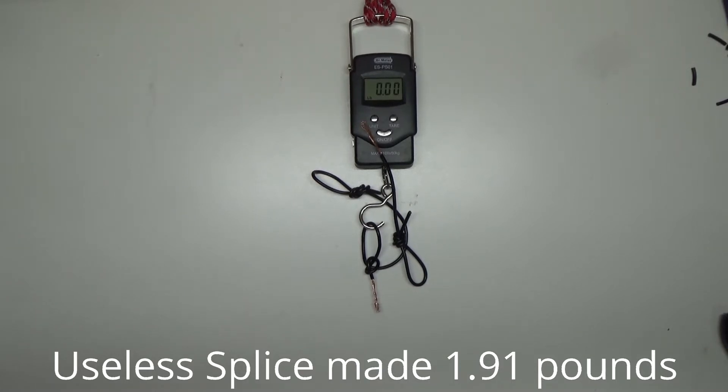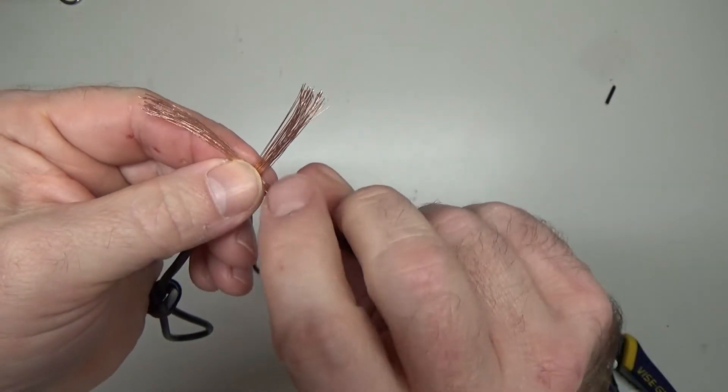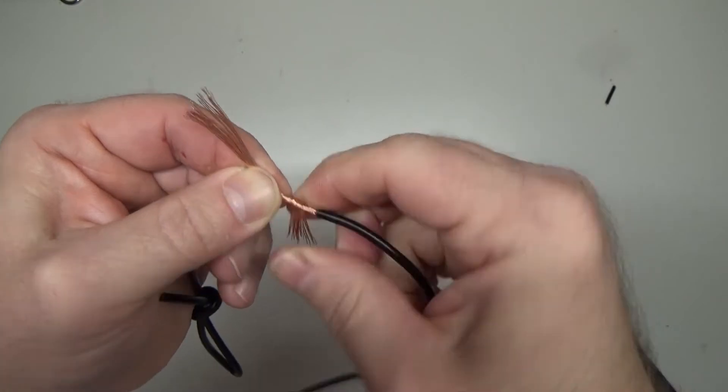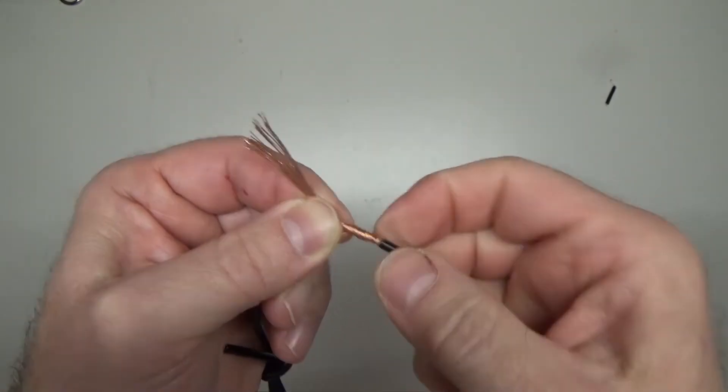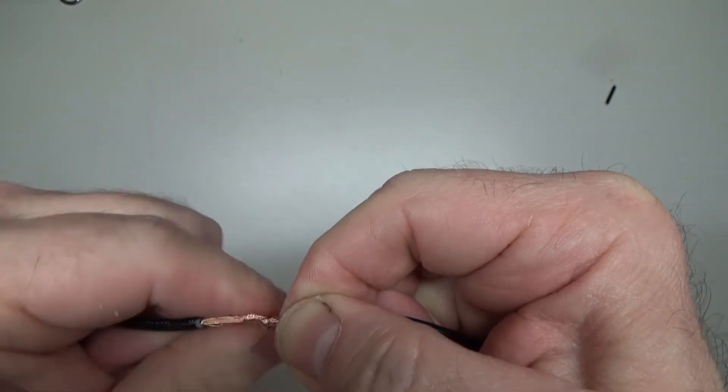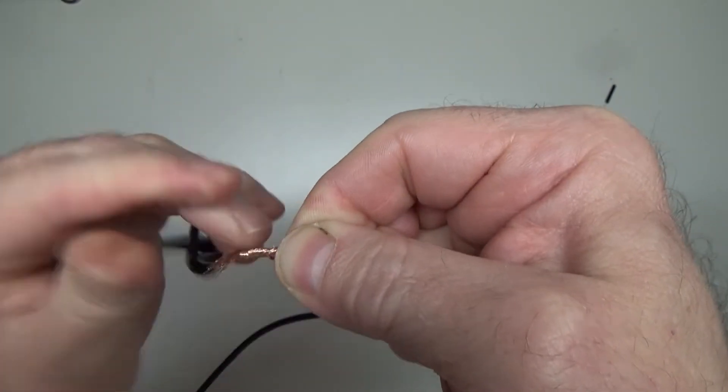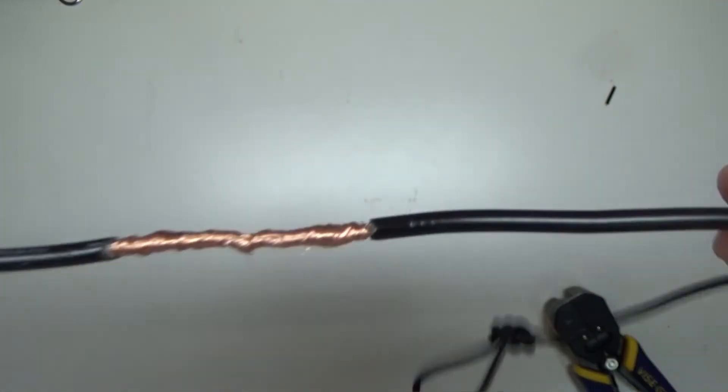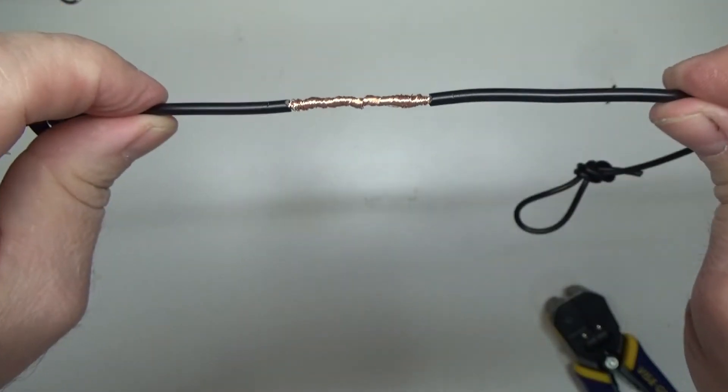Now this time we're going to do the Western Union splice. Cross your wires at the middle of the copper, take this one, wrap it like this, and pull tight on your wire as you wrap it. You start at the middle because it ends your wrap right there at the insulation. Now do this with the opposite direction. This is a pretty stout little wrap right here. There you go, you can see how nice tight package that is. If you want to solder that, you'd have a super strong joint because obviously it would make it all one solid piece.